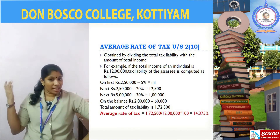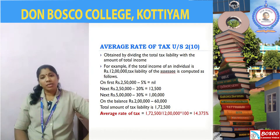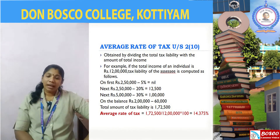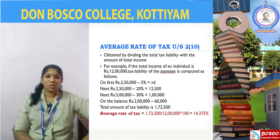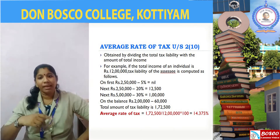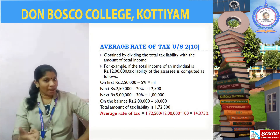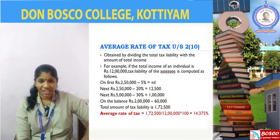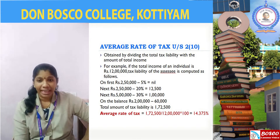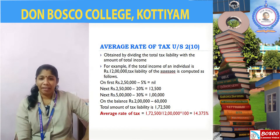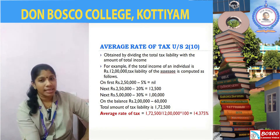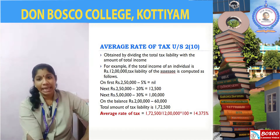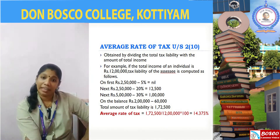So what is average rate of tax and what is maximum marginal rate? The first one is average rate of tax, which is defined under Section 2 subsection 10 of the Income Tax Act of 1961. As the name indicates, average rate of tax is obtained by dividing the tax liability with the total income.